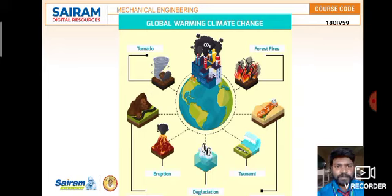Now, moving to acid rain. Sulfur dioxide and oxides of nitrogen are emitted into the atmosphere and transported by wind and air currents. These react with water, oxygen, and other chemicals to form sulfuric and nitric acids, which then mix with water and other materials before falling to the ground as acid rain.